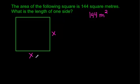So, we can just call this x and this x. So, wouldn't you agree with me that x squared, or x times x, should give us the area, which is 144?